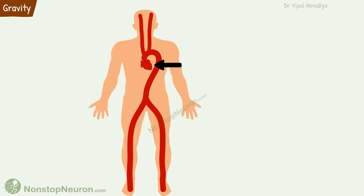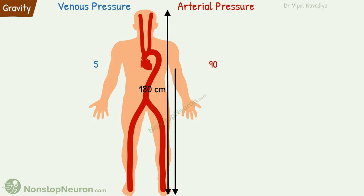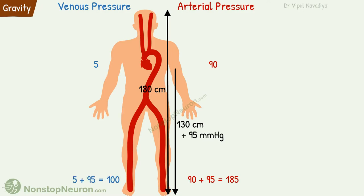The reference level to measure blood pressure is the level of the heart, where arterial pressure is about 90 mmHg and venous pressure is about 5 mmHg. As we go lower, the pressure increases. For an average 180 cm tall person, a foot lies 130 cm below the heart. This deep column of blood creates an extra 95 mmHg pressure, so at the foot, arterial pressure is 90 + 95 = 185 mmHg and venous pressure is 5 + 95 = 100 mmHg.